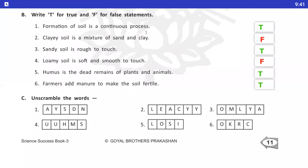Now, question Number 3, Unscramble the words. Number 1, A Y S D N. Answer is Sandy. S A N D Y.